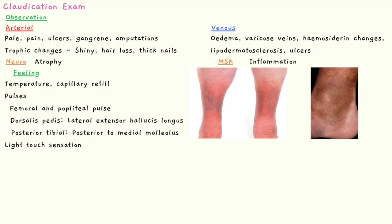Assess how palpable the pulses are: the femoral pulse around the groin area, the popliteal pulse behind the knee, the dorsalis pedis pulse — located lateral to the extensor hallucis longus tendon, between the big toe and adjacent toe — and the posterior tibial pulse, located posterior to the medial malleolus. Finally, assess light touch sensation, which could indicate paresthesia in the setting of arterial insufficiency or may suggest a neurological cause.